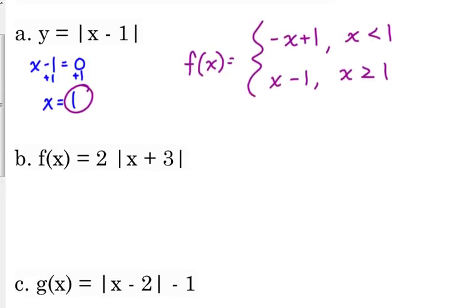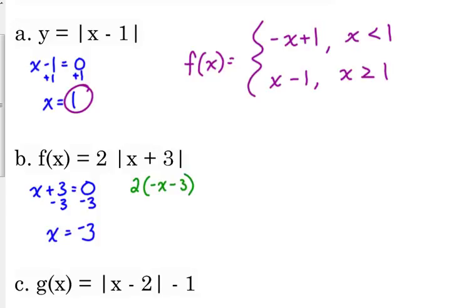For example b, 2 times the absolute value of x plus 3: only look at what's inside — x plus 3 equals 0, so x equals negative 3. Because there's a factor of 2 outside the absolute value, we need an intermediate step. We change all signs inside to get negative x minus 3, then drop the bars and use parentheses so we can distribute the 2: that gives negative 2x minus 6.